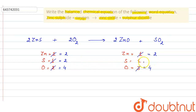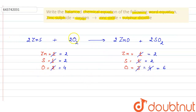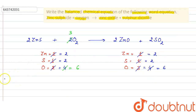Now zinc atoms are equal but sulfur atoms are not — on the product side we have only 1 sulfur atom. So we write 2 in front of SO₂, and sulfur now becomes 2. But oxygen also increases: we have 2 from zinc oxide and 4 from sulfur dioxide (2×2), so total oxygen atoms are now 6. To equalize, we need 6 oxygen atoms on the reactant side. We remove the 2 and instead write 3 in front of O₂, making oxygen 3×2 = 6 on both sides.